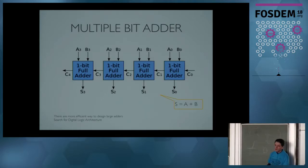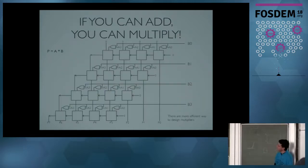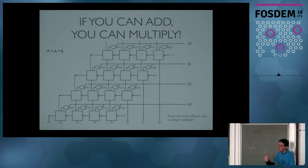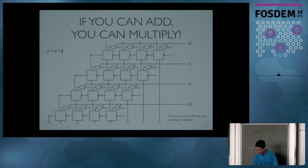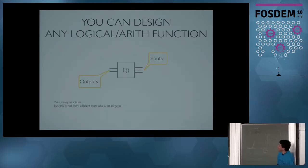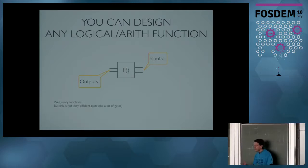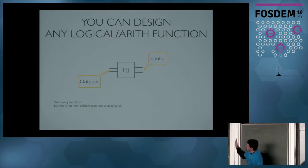And if you combine full adders, you can also do multiplication, so it's even more powerful. This is an example of a four-bit by four-bit multiplication. It's not very efficient in terms of area, but it does work. So if you continue to combine gates, you can do almost whatever you want — from inputs, do any computation, and create outputs.